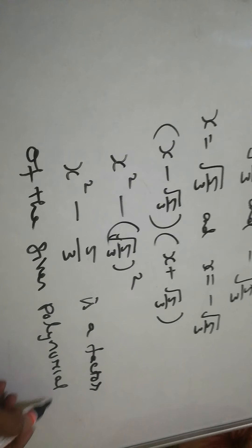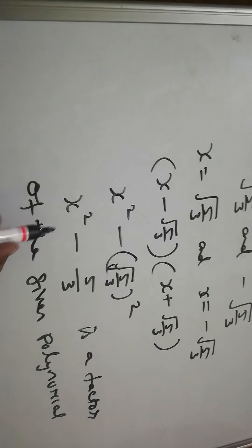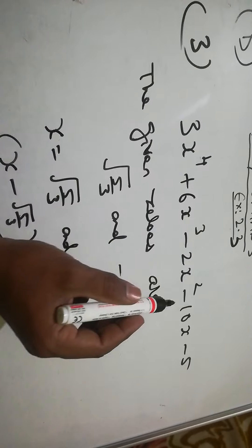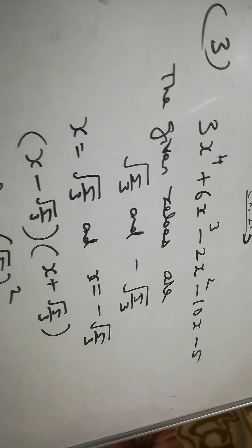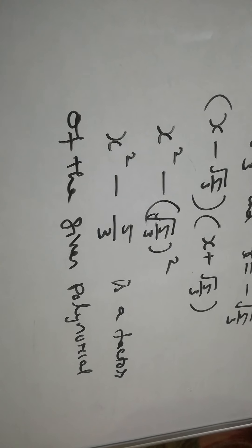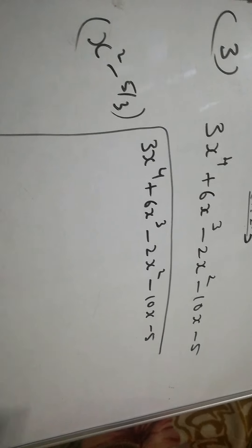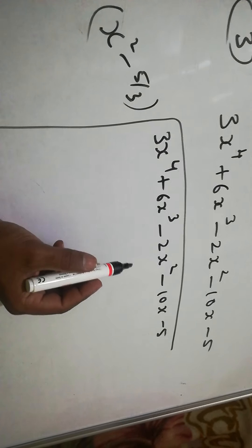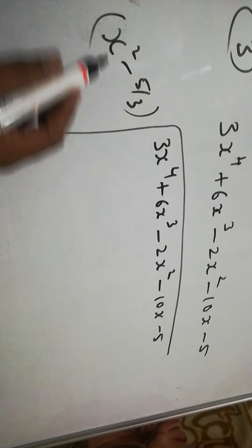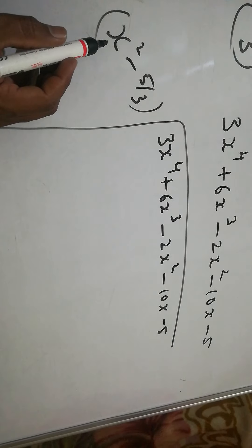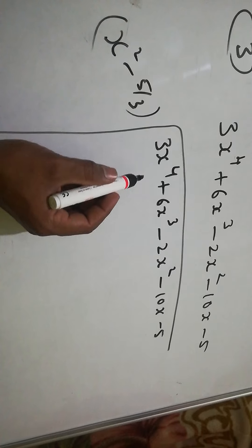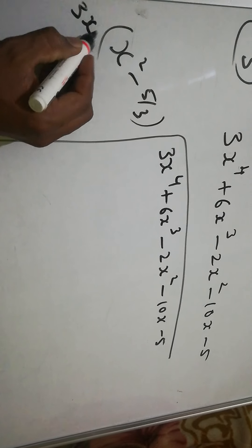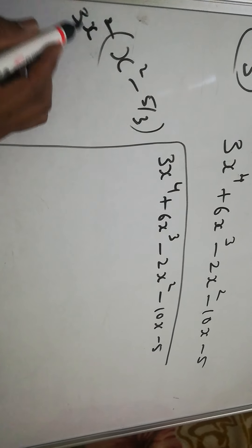Now we'll divide the given polynomial by x² - 5/3 using long division. To get 3x⁴, we need to multiply x² by 3x², so we write 3x².